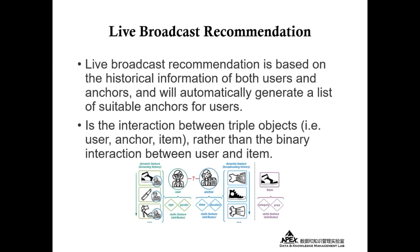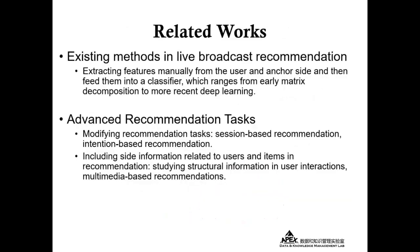Our paper focuses on the problem of live broadcast recommendations. The display selection and expressiveness of entries can free users from the tedious search on cell phones. Live broadcast recommendations is based on the historical information of both users and entries, and will automatically generate a list of suitable entries for users. It is the interaction between triple objects: user, entry, and item, rather than the binary interaction between user and item. The figure below is an example of a live recommendation about recommending an entry to a user. This live broadcast task is very new and there is very little work directly related to it.